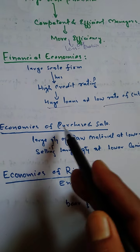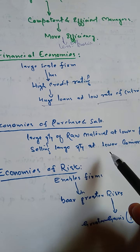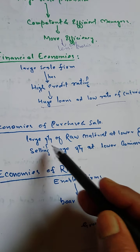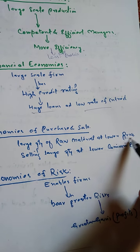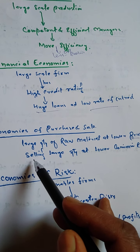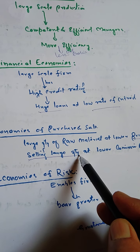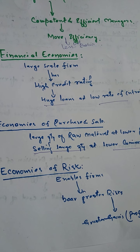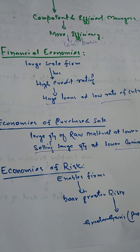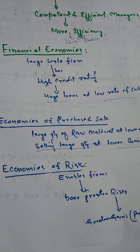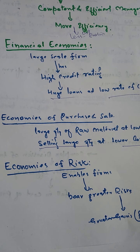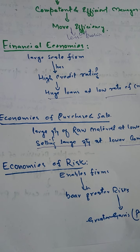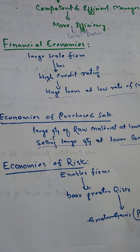Then we have economies of purchase and sale. Jab ek firm ka size expand hota hai to us ka market bhi expand hota hai. Woh large quantity of raw material khareed sakti hai at lower price, aur us ke liye market opportunities bahut ziyada hoti hain — it can sell large quantity even at lower commission rates. Jab firm large hoti hai to us ke liye commission rates kam ho jate hain. Inhe hum market economies bhi kehte hain.